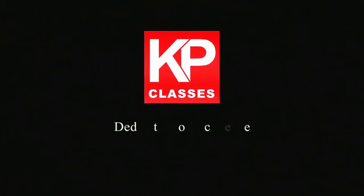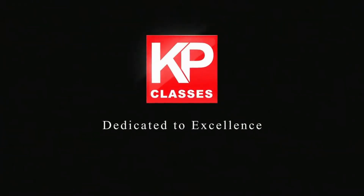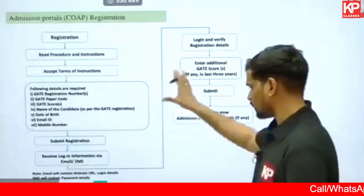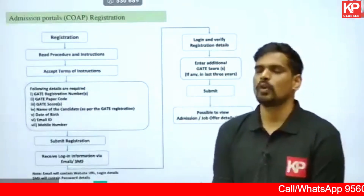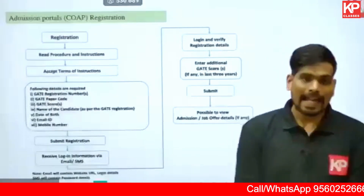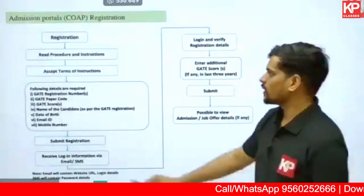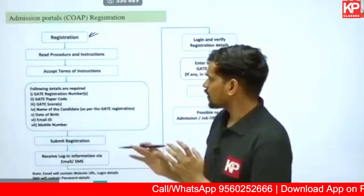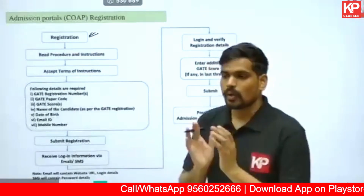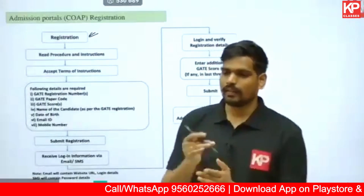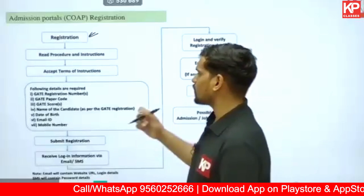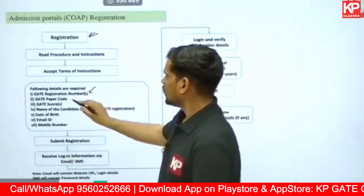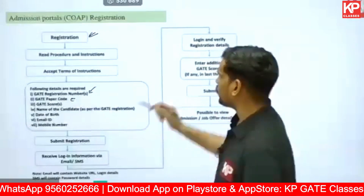KP Classes, dedicated to excellence. Starting with COAP registration — this is a flowchart on the website of COAP which mentions the overall admission and registration process. There's a link for registration on the COAP website. You'll need to go through the instructions, accept the terms and conditions. The inputs required include your GATE registration number and the GATE paper code, which is AR for architecture.